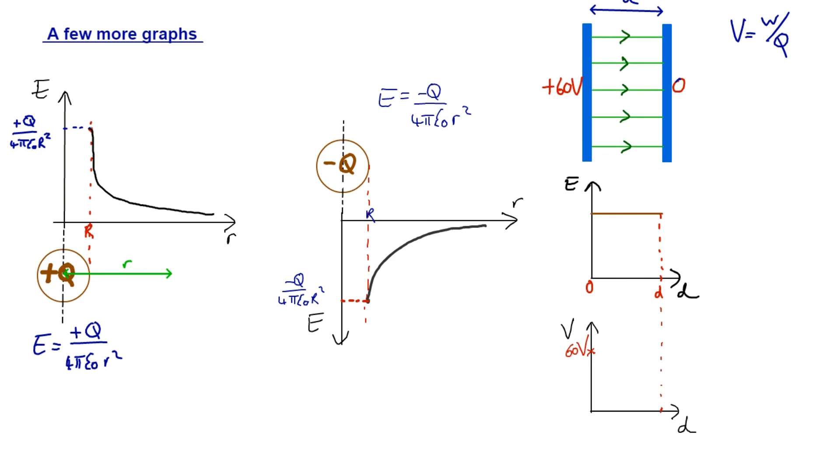And well, because it's a uniform field, you know, the further I go, the more work I have to do if I'm going against the grain. So therefore, I can put in a nice straight line, just straight down between the two. Bam.